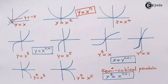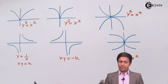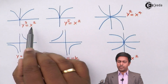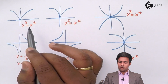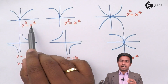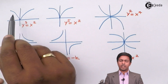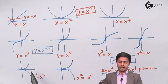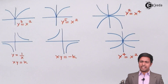These next two curves — X² = Y³ and X² = Y⁵ — are also semi-cubical parabolas, but now X is squared. Whenever we have a squared term, the curve is symmetric about the opposite axis. Since X² appears here, the curve is symmetric about the Y-axis. The shape is the same as the previous semi-cubical parabolas, just rotated.